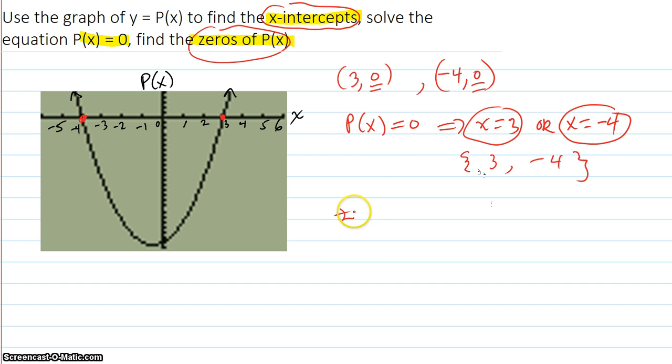So, the zeros, which are also called roots, are, again, the same numbers, 3 and negative 4.